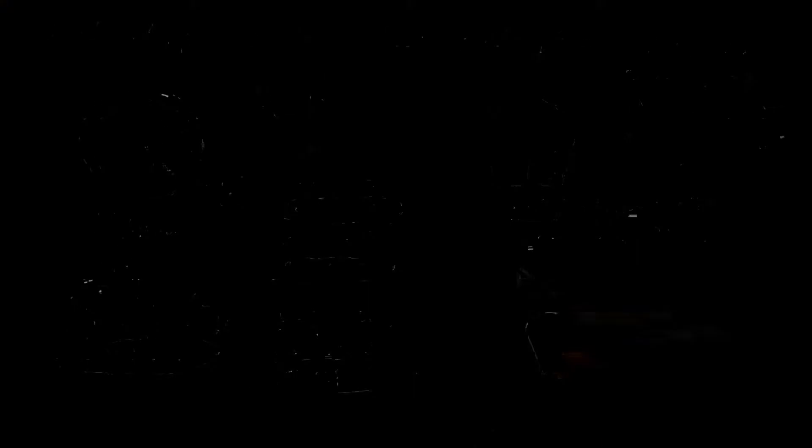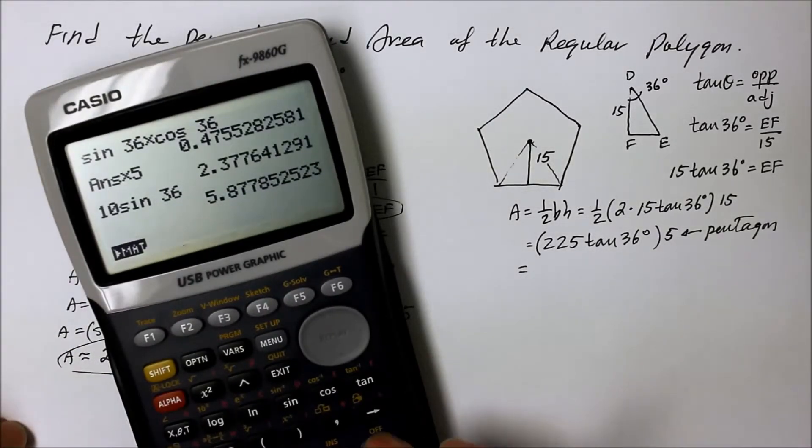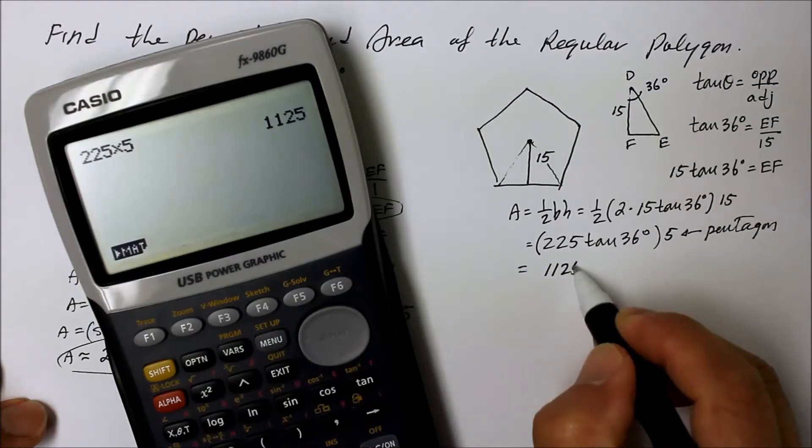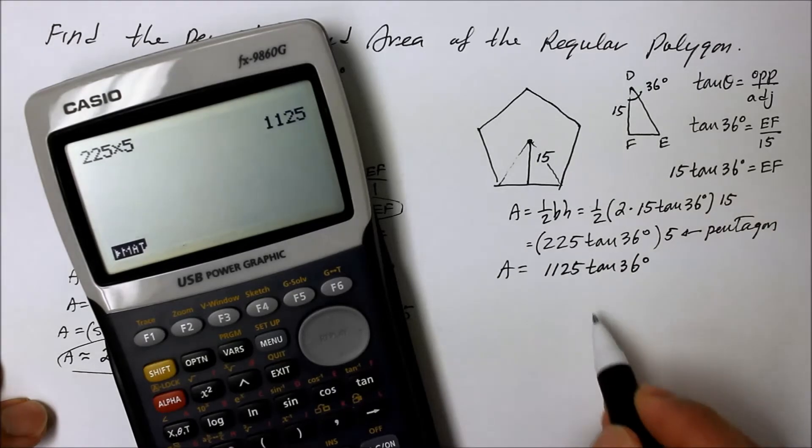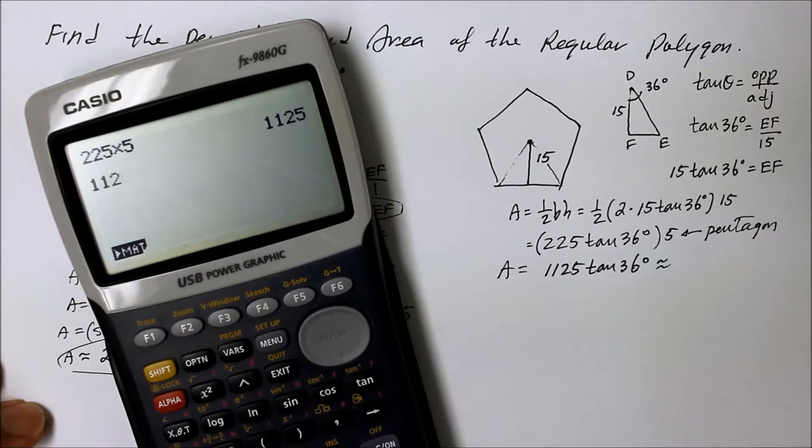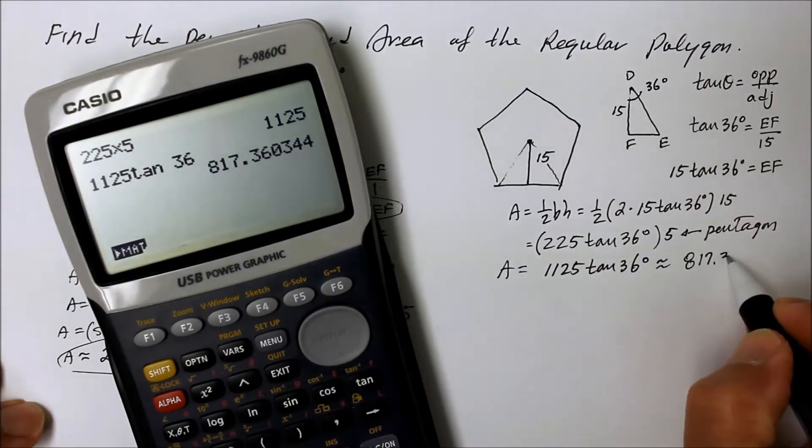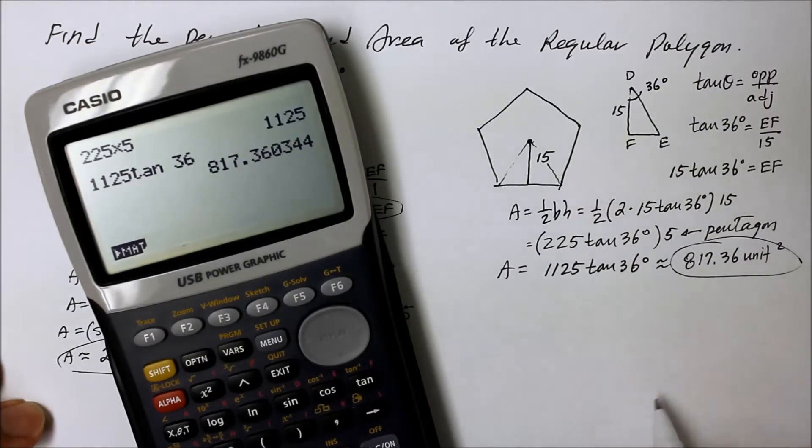Because we're talking about a pentagon. So therefore, 225 times—it says my batteries are low—so if we say 225 times 5 total triangles, area is 1125 times the quantity of tan 36 degrees. And that's the total area. And if you want to get a numerical value of that, then you go 1125 tan 36 degrees, we get around 817.36 unit squared. There it is.